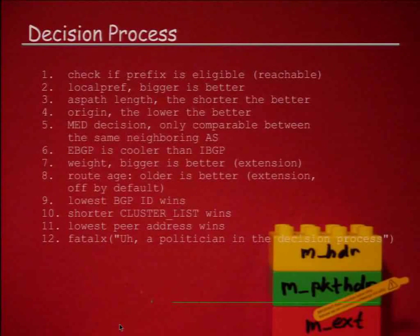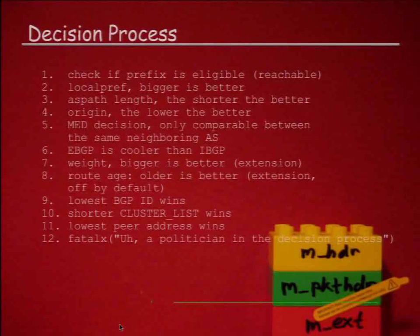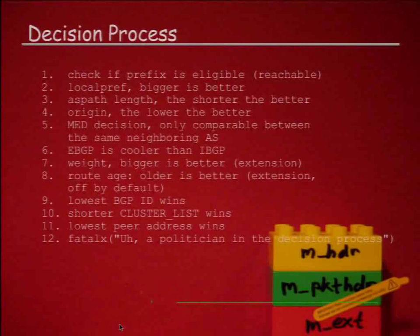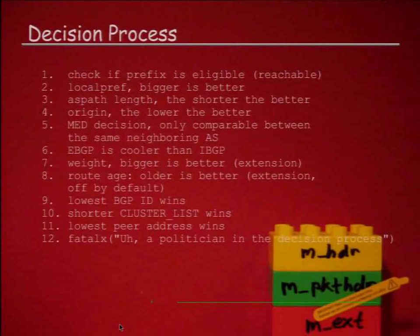The rest becomes a bit academic. The next step is route age — older is better because it means more stable. This is an extension we did; it's off by default because it's non-standard. If we still can't take a decision, we get into bullshit land: the lowest BGP ID wins. The BGP ID is the numerically lowest IP address on the router — a very good factor to decide which route is best. After that you look at the cluster list, which doesn't make sense. If that still doesn't lead to a decision, the numerically lowest peer IP address wins. If even that doesn't work, it spits out an error and dies, because that's unreachable.